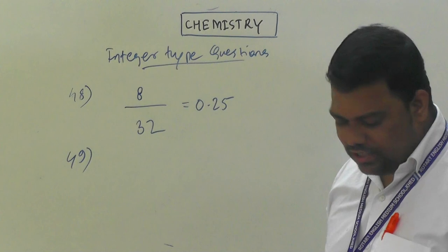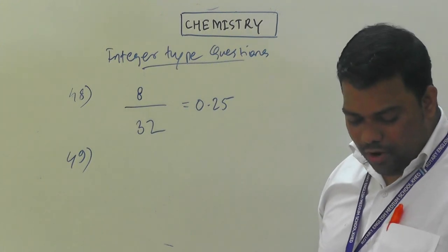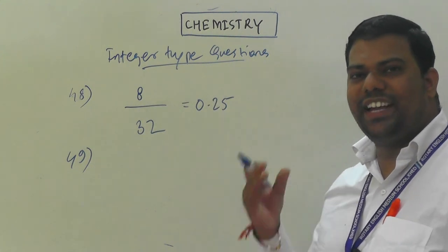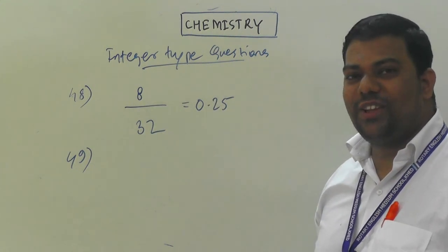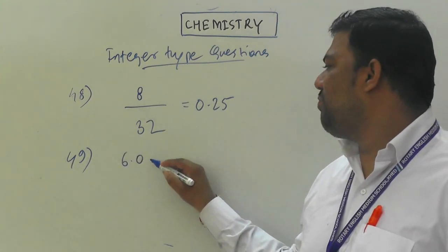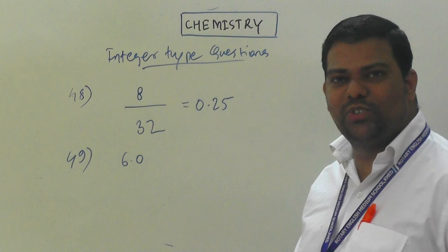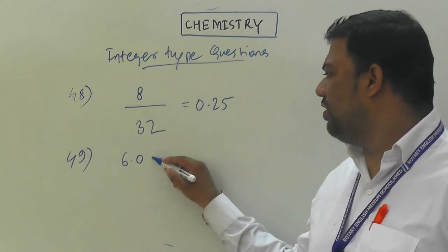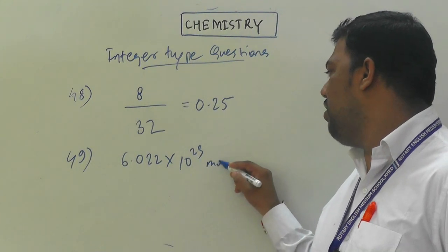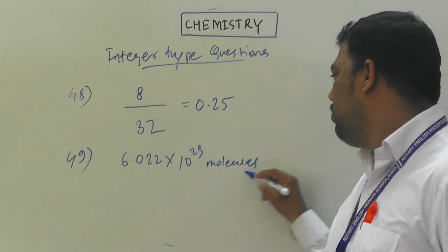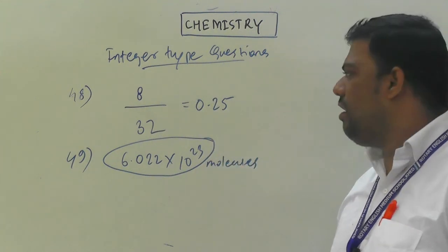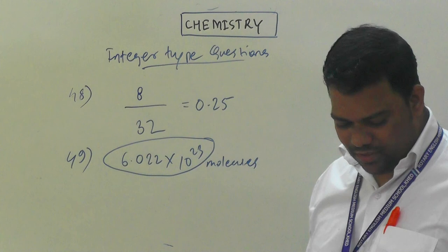Question number 49: the number of molecules in 16 grams of methane (CH₄). Since 16 g is one mole of CH₄, the number of molecules is 6.022×10²³. Write this number to be awarded marks.